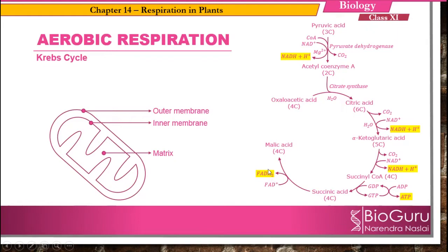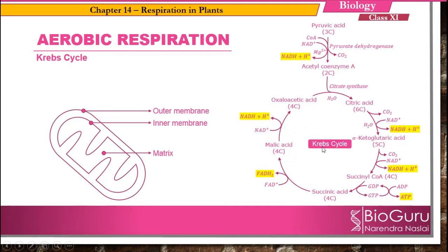Further, succinic acid gets converted into malic acid. During this process, one molecule of FADH2 is produced by the reduction of FAD+. Afterwards, from malic acid, oxaloacetic acid is regenerated, and during this process one more molecule of NADH is produced by the reduction of NAD+. This whole reaction is called the Krebs cycle, where further oxidation of pyruvic acid takes place with the generation of NADH, ATP, and FADH2, and also removal of carbon dioxide.